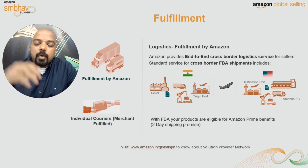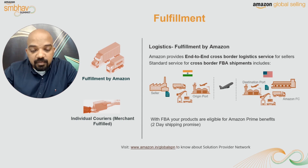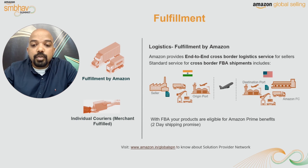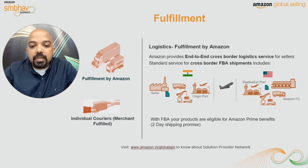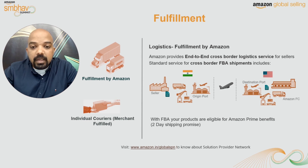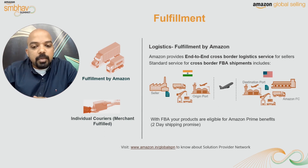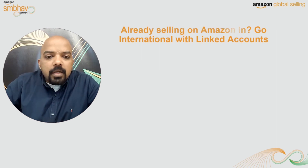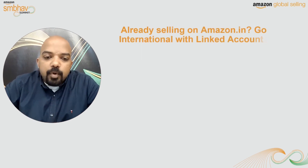The key reason we recommend FBA is that products stored in Amazon warehouses in FBA mode are eligible for Amazon Prime benefits — the most important being two-day delivery. Once the customer places the order, Amazon ensures the product is delivered within two days. This is one of the critical advantages of FBA and is also one of the deciding factors when customers make a purchase decision. From a global selling perspective, we strongly recommend the FBA mode of fulfillment.